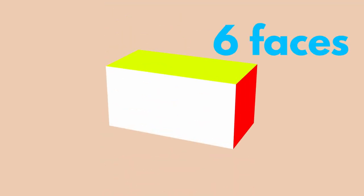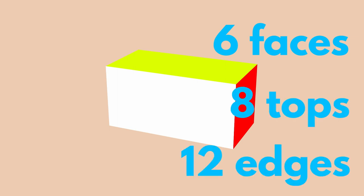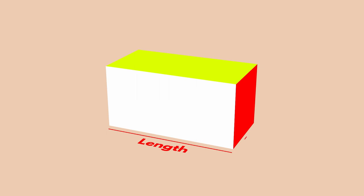Let's describe the rectangular parallelopiped. We can observe that it has 6 faces in total, 8 vertices, and 12 edges. The flat plan of the rectangular parallelopiped is presented here. A rectangular parallelopiped is determined by its 3 dimensions: the length, width, and height.